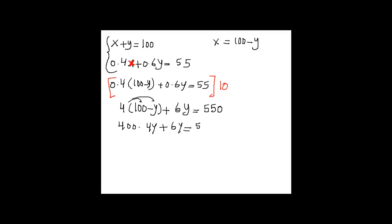So here we have 400 plus 2y equals 550. So 2y equals 550 minus 400, so 2y equals 150.